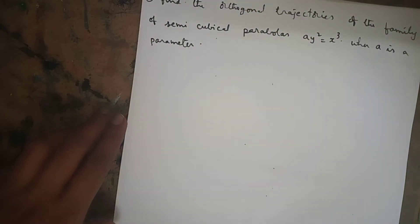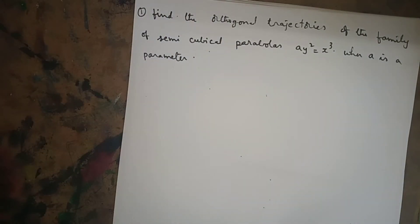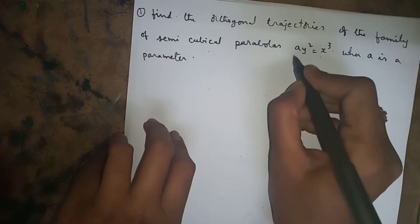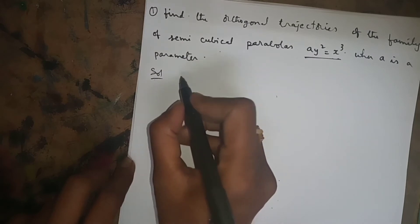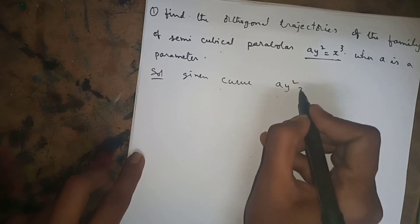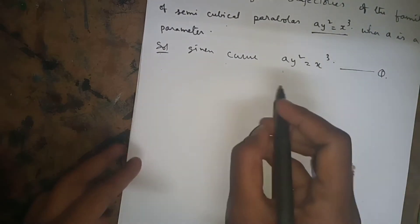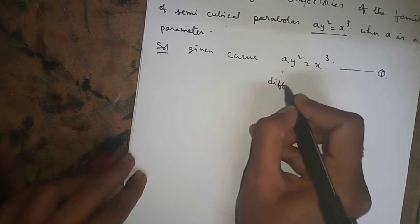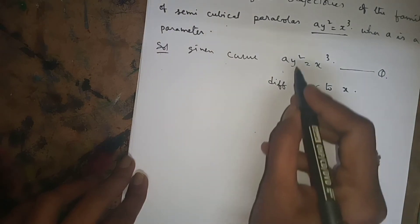Problem 1: Find the orthogonal trajectories of the semicubical parabolas ay² = x³, where a is a parameter. The given family of curves is ay² = x³, where a is a parameter. Write down the given equation, then differentiate with respect to x.